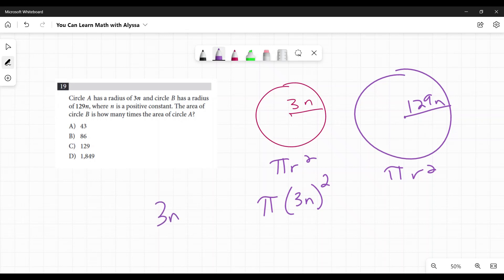It is not 3n squared. It is 3n squared. That is critical, and it's an easy way to get this wrong. So we have pi times 3n squared is 3n times 3n, or 9n squared.